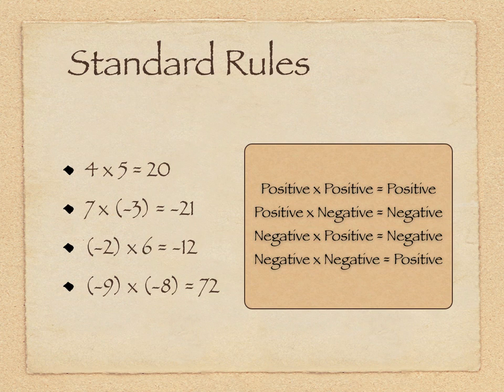Anytime we multiply a positive times a negative or a negative times a positive, the product will be negative. So we can see that in the example, 7 times negative 3 equals negative 21, and negative 2 times 6 equals negative 12.